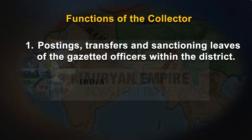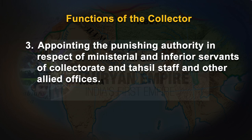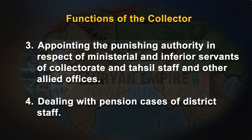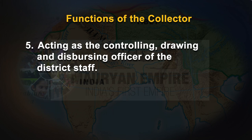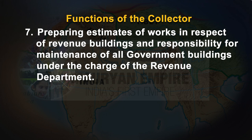The office of the District Collector is an important institution bequeathed by the British rulers to the Indian administrative system. He performs traditional revenue functions as well as development functions. Throughout the country, the power and functions of the collector more or less remain the same. Broadly, the collector performs the following traditional functions: posting, transfers, and sanctioning leaves of Gazetted officers within the district; posting, transfers and leave of Naib Tahsildars and Tahsildars; appointing and punishing authority in respect of ministerial and inferior servants of Collectorate and Tahsil staff; dealing with pension cases of district staff; acting as controlling, drawing and disbursing officer; submitting annual budget estimates; preparing estimates of works in respect of revenue buildings and maintenance of all government buildings under the revenue department.